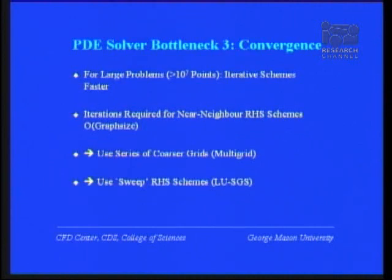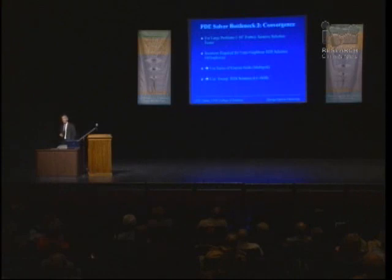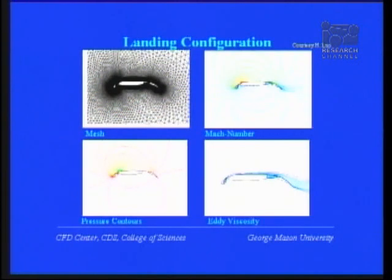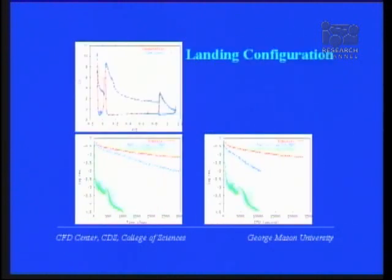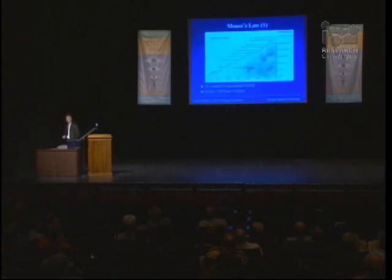The third problem was solving very large problems. By now we are solving up to 10 to the 11 grid points; above 10 to the 7, iterative schemes are faster, and if you're not careful this can take a lot of time. Fortunately, bright minds came up with fast solution techniques. Here is a typical landing configuration — you can see the wings spreading — and if you did this with an ordinary solver you would compute forever, whereas with one of these advanced solvers you converge relatively quickly.